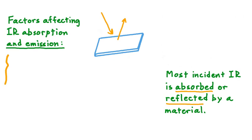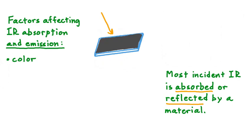The first factor is the color of that material. The color of the material we've drawn here is white. White, just like with visible light, is very good at reflecting infrared radiation. This means that most of the IR that reaches this material would just bounce off of it — the great majority is reflected, and very little is absorbed. On the other hand, if we were to make our material color black, that would mean the material is very unlikely to reflect radiation and very likely to absorb it.